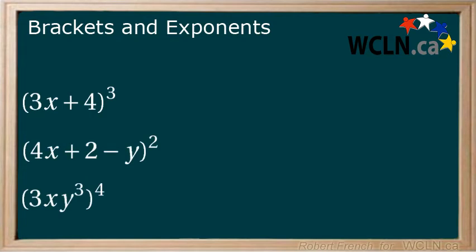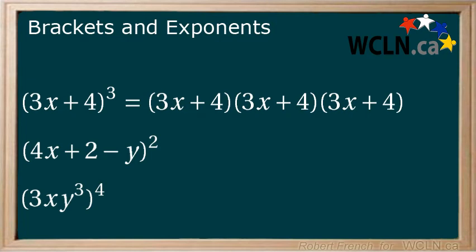Here are some examples. We won't solve these all the way. Instead, you will just take them to the first step of multiplying the expressions to themselves the appropriate number of times. I'll do the first one. 3x plus 4 in brackets to the power of 3 is equal to 3x plus 4 in brackets multiplied to itself 3 times.